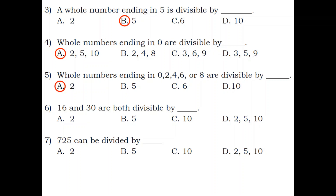Number 6. 6, 16, and 30 are both divisible by blank. A. 2. B. 5. C. 10. D. 2, 5, and 10. Answer: A. 2.